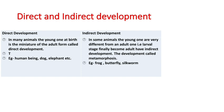In indirect development, young ones such as tadpole and adult frog — or caterpillar, pupa, and butterfly or silkworm from previous classes — the adult form is completely different from the young one. The young ones do not resemble the adult form at all. First comes the larval stage, which slowly develops and converts into the young one. Such development is called indirect development. Best examples are frog, butterfly, and silkworm.